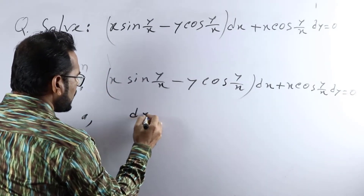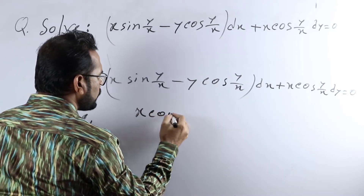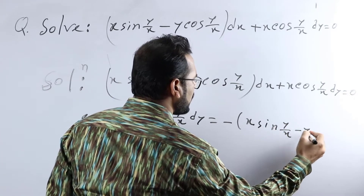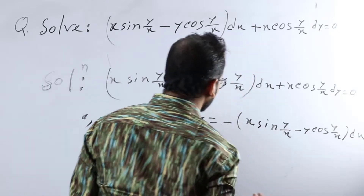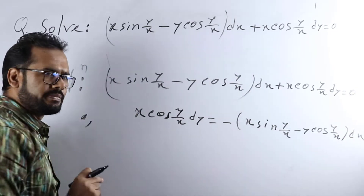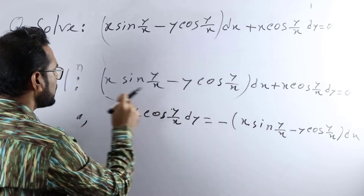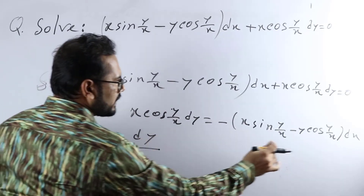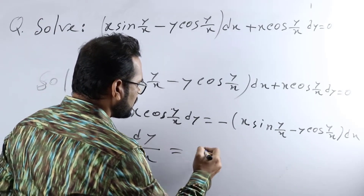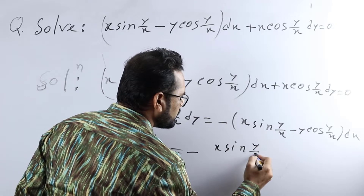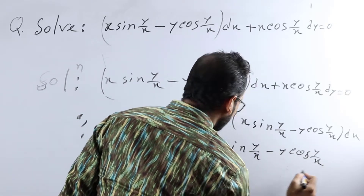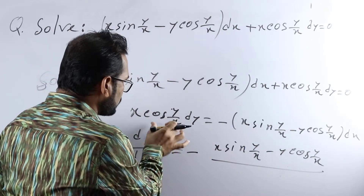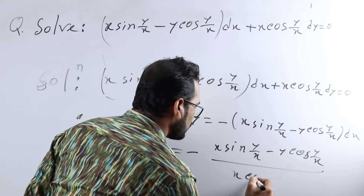To identify the type, I am rearranging: x cos(y/x) dy equals minus x sin(y/x) minus y cos(y/x) dx. The term from the left side has been shifted to the right side, which is why the sign changes from positive to negative. Using cross multiplication, dy/dx equals minus x sin(y/x) minus y cos(y/x) divided by x cos(y/x).